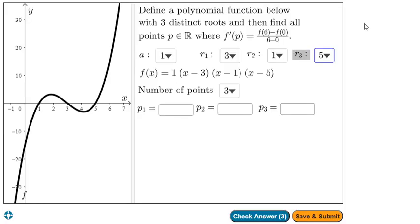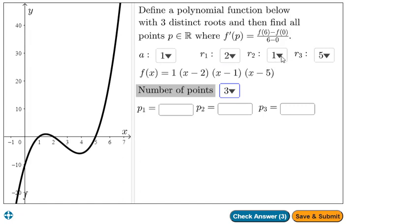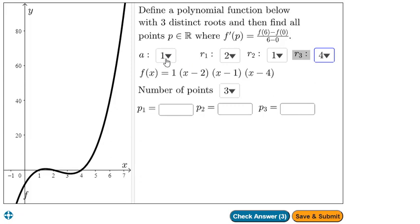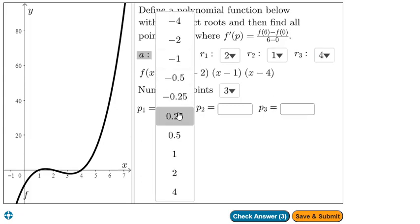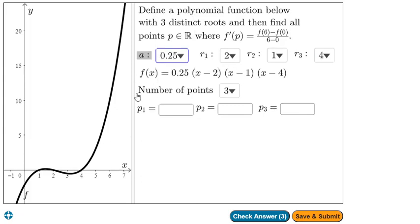This is an incredibly involved question dealing with the mean value theorem. As we can see, the slope from 0 to 6 is going to be positive and there are going to be two points here. The students can actually adjust the values to make the problem a little easier if they want. For example, I could add in a 2 and a 4 here and then use a to be one fourth to give myself some simpler numbers to work with possibly.